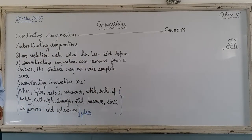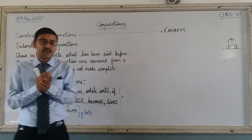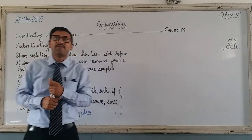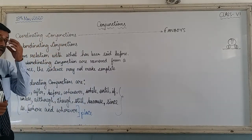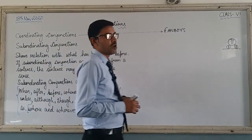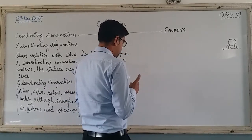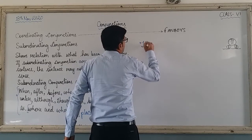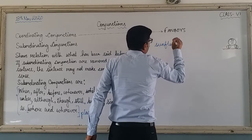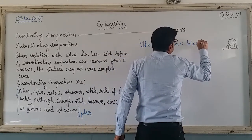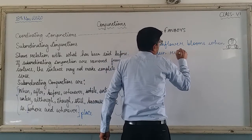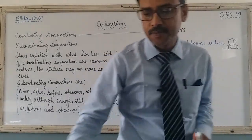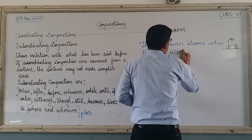Now what we will do is pick one conjunction and see whether it satisfies these rules or not. Number one: it shows relation with something said before. Number two: if we drop the subordinating conjunction, the sentence may not make full sense. For example, let's frame a sentence with 'when': 'The sunflower blooms when the sun rises.' We can also write it as: 'When the sun rises, the sunflower blooms.'